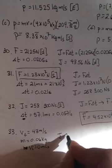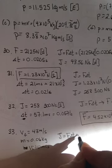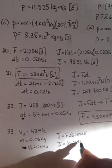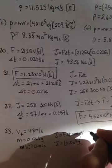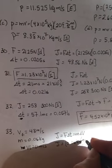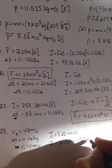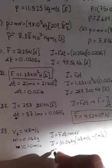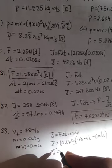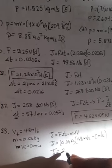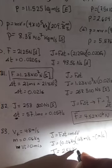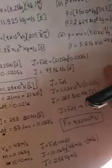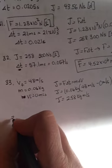So we know J is equal to F delta T, which is equal to M delta V. So in this case, we're using the M delta V. So 0.06 kilograms. Delta V is VF, 43 meters per second, minus VI, which is 0. Do the math. And you get a J of 2.58 kilogram meters per second. And it didn't tell us any direction. So that's going to be in the direction of motion.